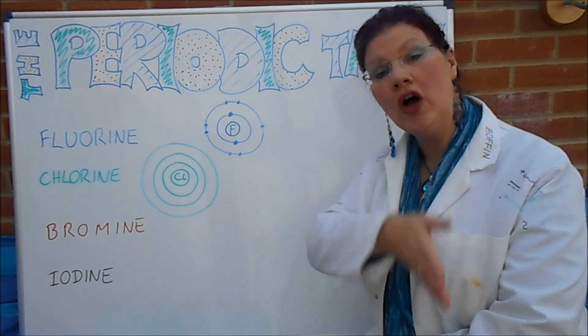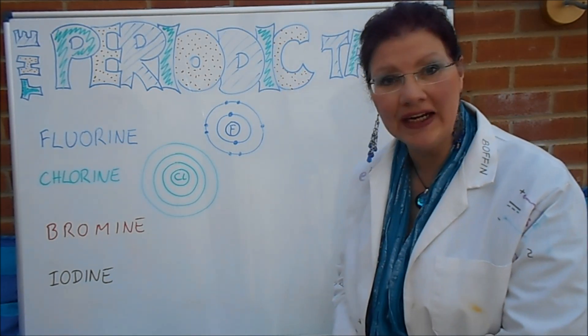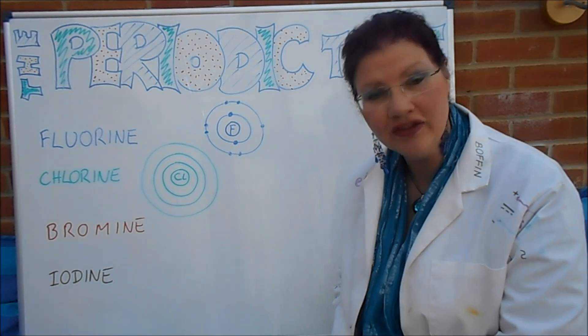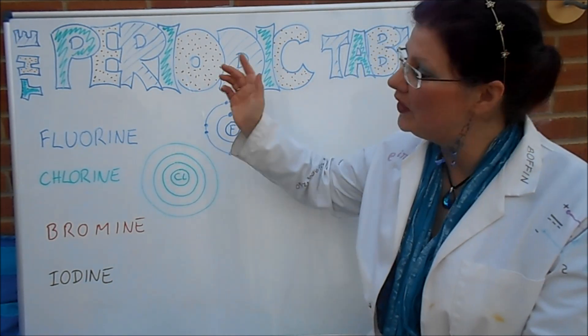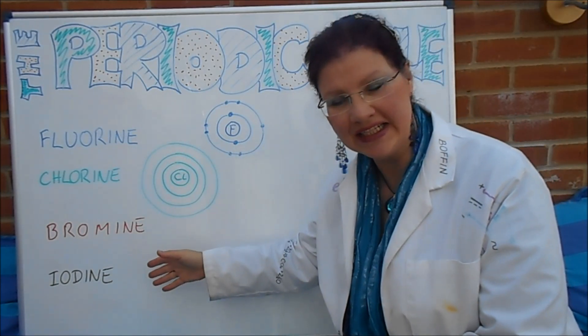So that's Group 7 over on the right-hand side there. Group 7 is often known as the Halogens, and I'm sure you're familiar with some of the members of that group. The four most common ones are Fluorine, Chlorine, Bromine, and Iodine.